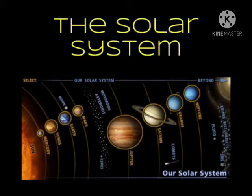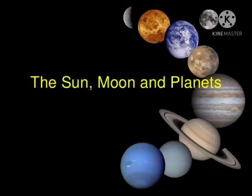Now, what is the solar system? The solar system consists of the sun, moon and the planets.